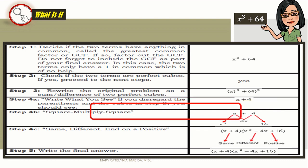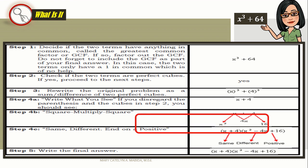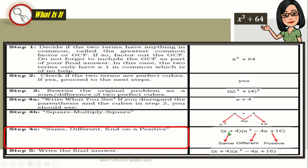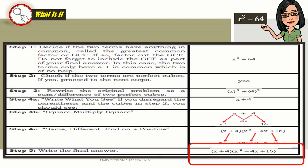Okay, step 4b: square, multiply, and square. So you square the first term, multiply the first and the second, and square the last term. Alright. And then, we have our SOAP, or same, same sign, different, different sign, and end on a positive. You got it? You got it? You got it. Let's go to step five. Write the final answer. And the final answer is... Ta-da-da!